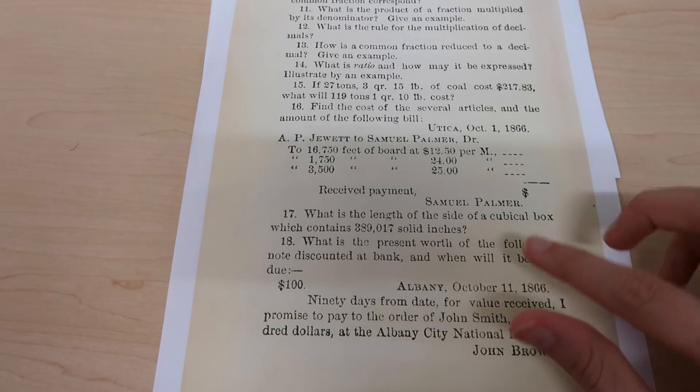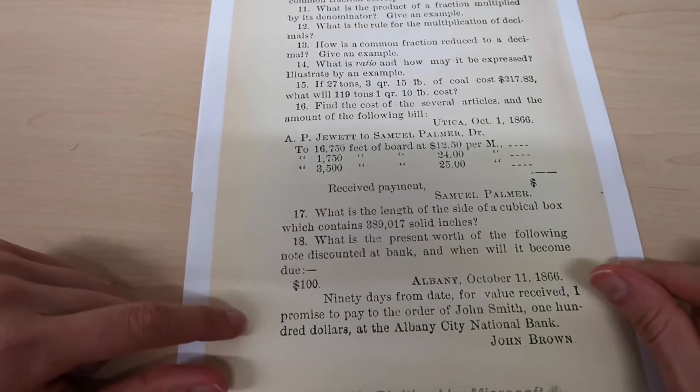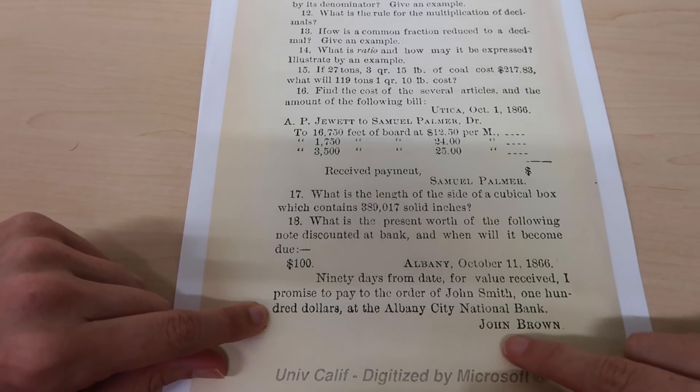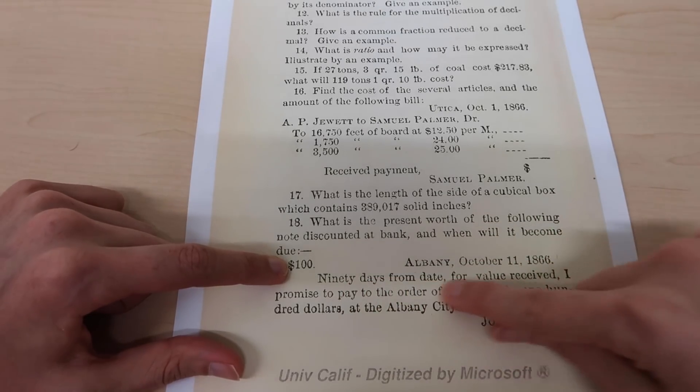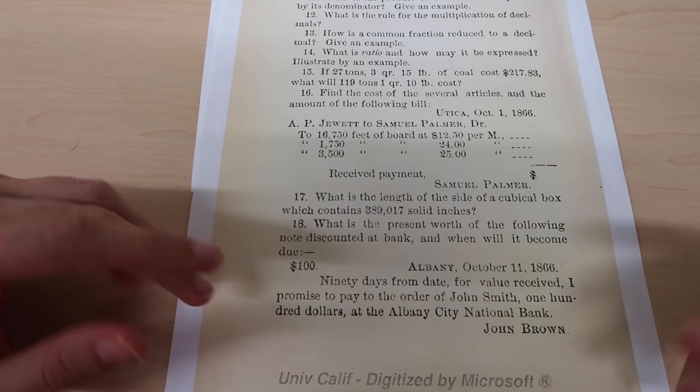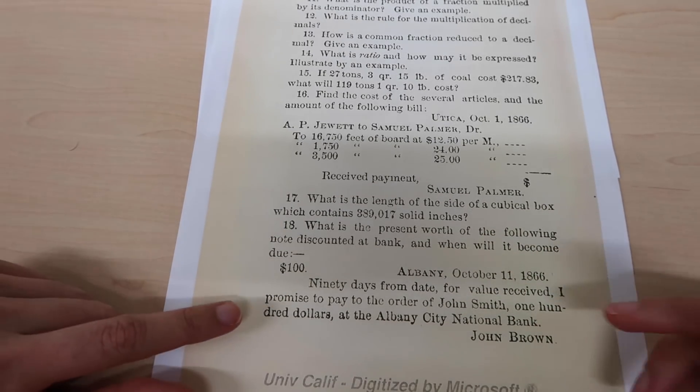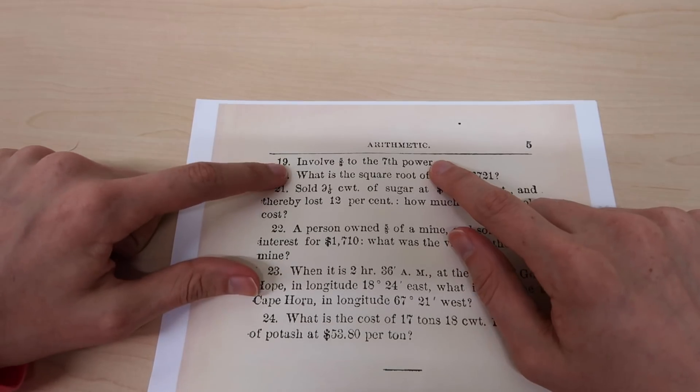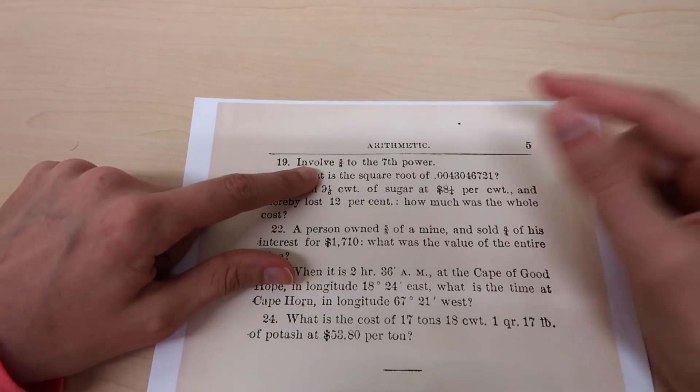Number 18: what is the present worth of the following note discounted at a bank and when will it become due? So we've got a nice little letter here: 90 days from date for value received I promise to pay to the order of John Smith $100 at the Albany City National Bank, John Brown. I would say these types of word problems kind of do age this exam a little. You really wouldn't see something written in the same way today. Something that has not aged itself though, in fact has aged pretty well, is things like this where it's just using the numbers and the most basic sentences. Maybe this one here, involve five-eighths to the seventh power, that's pretty much the same as what you'd see today, except maybe the word involve would be changed to find five-eighths or like solve five-eighths.